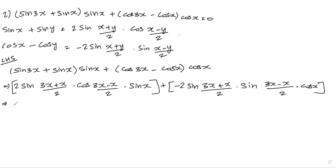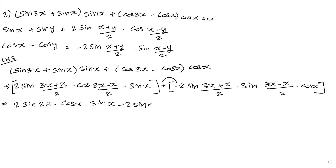So simplifying: 2 sin 4x — because 3x plus x equals 4x — so 4x divided by 2, into cos of (3 minus 1 = 2x), so 2x divided by 2 = x, gives cos x into sin x. Then plus minus gives minus 2 sin of 4x divided by 2, which is 2x, into sin of 2x divided by 2 = x, into cos x.